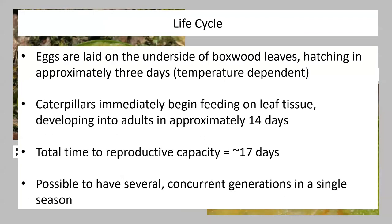A little bit on the life cycle: eggs are laid on the underside of boxwood leaves and hatch in just three days — the fastest hatch time I've ever talked about in any program I've done. Obviously it's temperature dependent, but it also tells you they don't overwinter as eggs. The caterpillars immediately begin feeding on leaf tissue and develop from caterpillar to pupa to adult in 14 days. That means the total time for a new generation is just 17 days to become sexually reproductive — about as bad as I've seen with an invasive species.